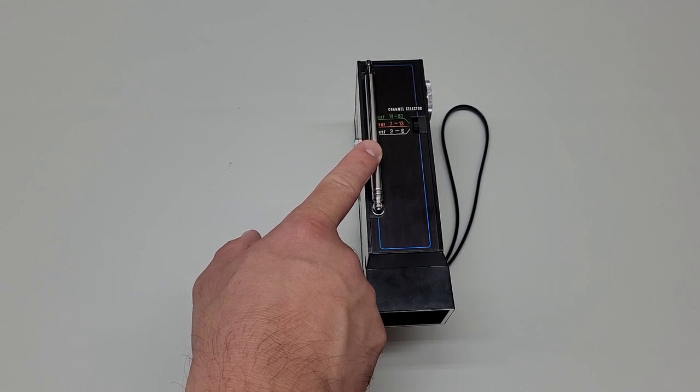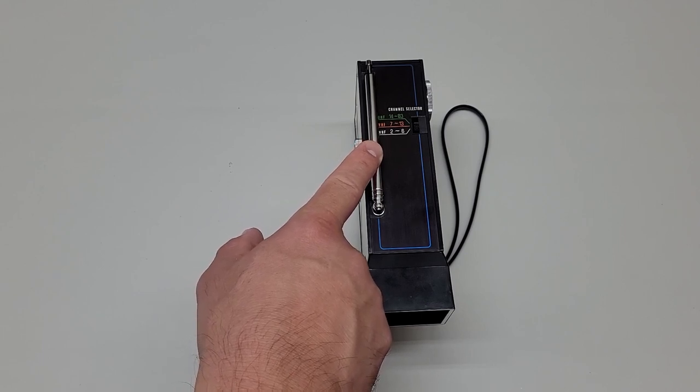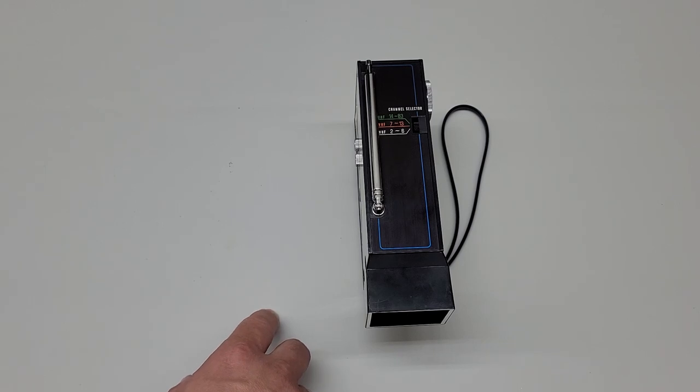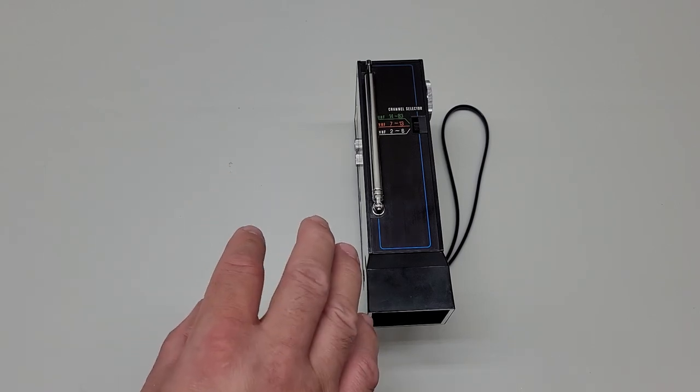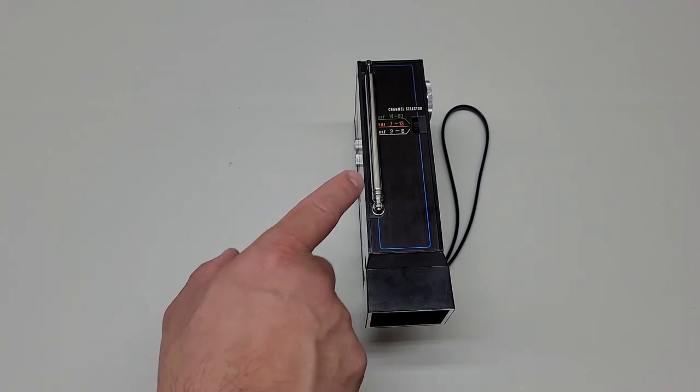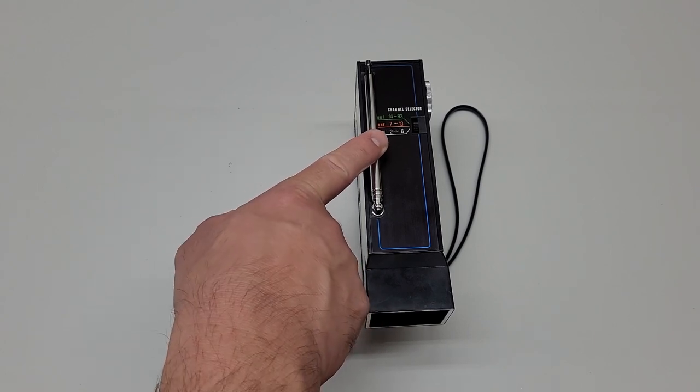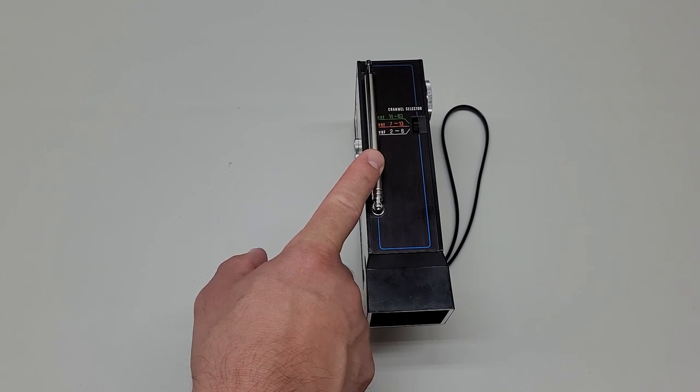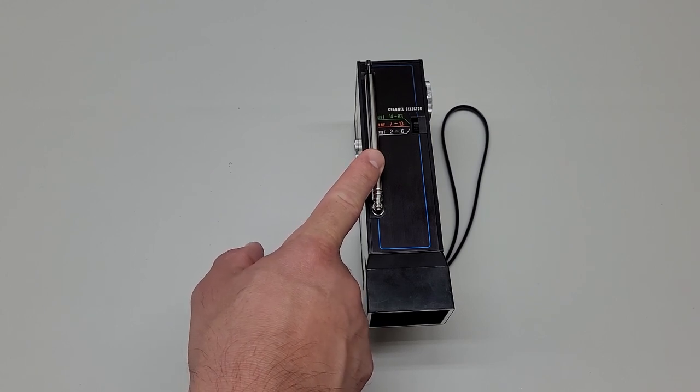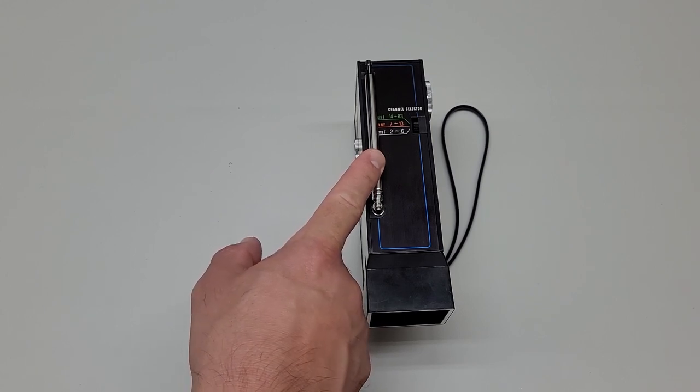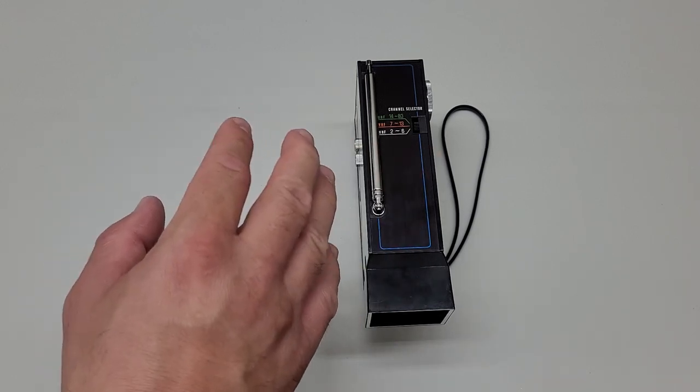VHF stands for very high frequency and it operates in a range of 30 megahertz to 300 megahertz. There's only 12 channels in that range from 2 through 13. The signal that's transmitted on these bands, the VHF band has a longer wavelength so they can easily go around obstructions to reach the receiver.